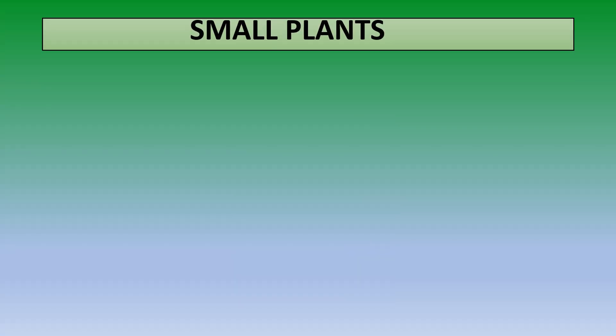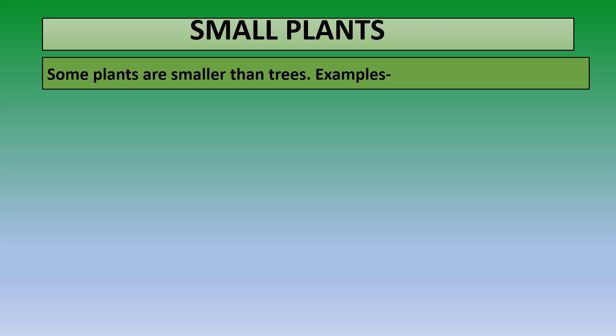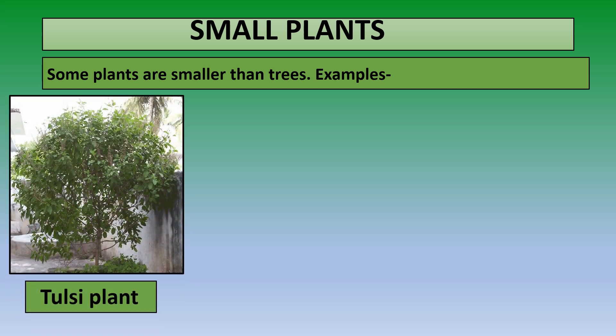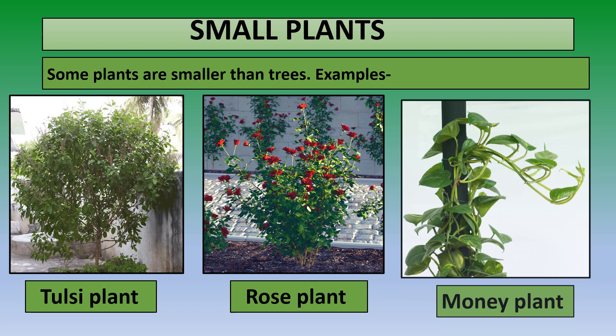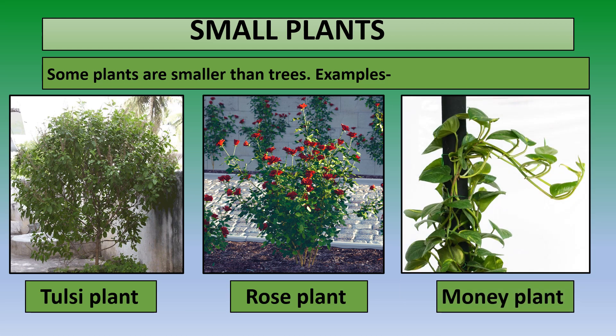Now let's look at small plants. Some plants are smaller than trees. Small plants include the tulsi plant, rose plant, and money plant. If you look at all these three plants, you will notice that they are much smaller than the big plants you have just learned about. They are smaller in size and are not so big and tall.